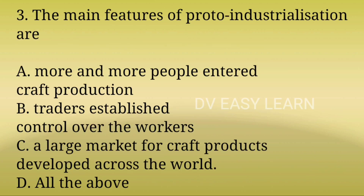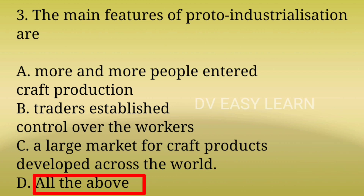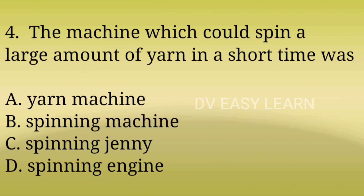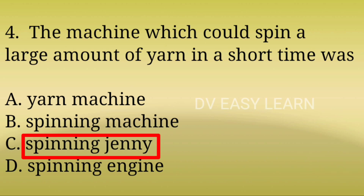3rd Question: The main features of Proto-Industrialization are? Correct answer: All of the above — more and more people entered craft production, traders established control over the workers, and a large market for craft products developed across the world. 4th Question: The machine which could spin a large amount of yarn in a short time was? Correct answer: Spinning Jenny.